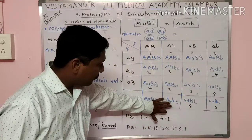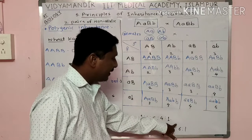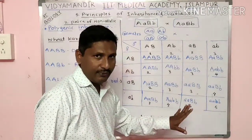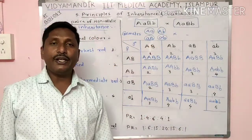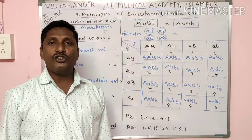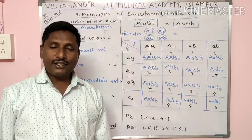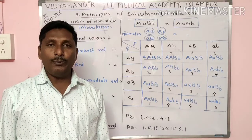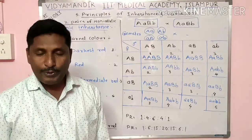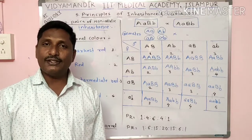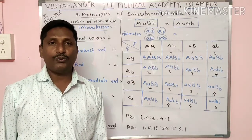This is the example of quantitative inheritance or polygenic inheritance. In the next video we will talk about complementary genes, supplementary genes, dominant epistasis, recessive epistasis, and duplicating genes. Thank you.